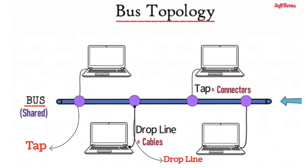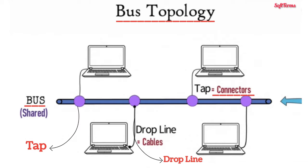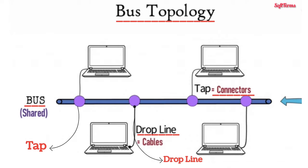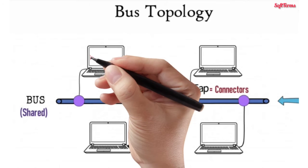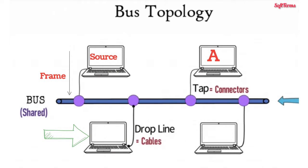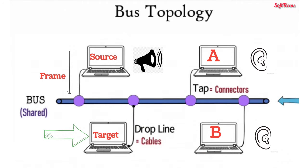Shared means that all connected computers use the same cables for data frame transmissions. Taps or connectors and drop lines are cables running between computers and the bus. In this topology, if one computer sends a data frame to a second computer, all other computers connected to the same central cable also receive the frame. However, the target computer only accepts it.